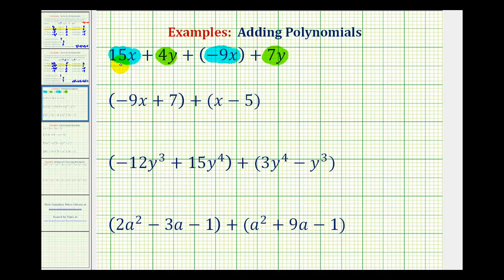So for example, to add 15x and negative 9x, we would have 15 plus negative 9 times the factor of x. And then to add the y terms, we would have 4 plus 7 times the factor of y. And since 15 plus negative 9 is 6, we would have 6x. And since 4 plus 7 is 11, we'd have plus 11y. Now if you do a few of these, you'll probably skip this step here and perform this addition mentally.